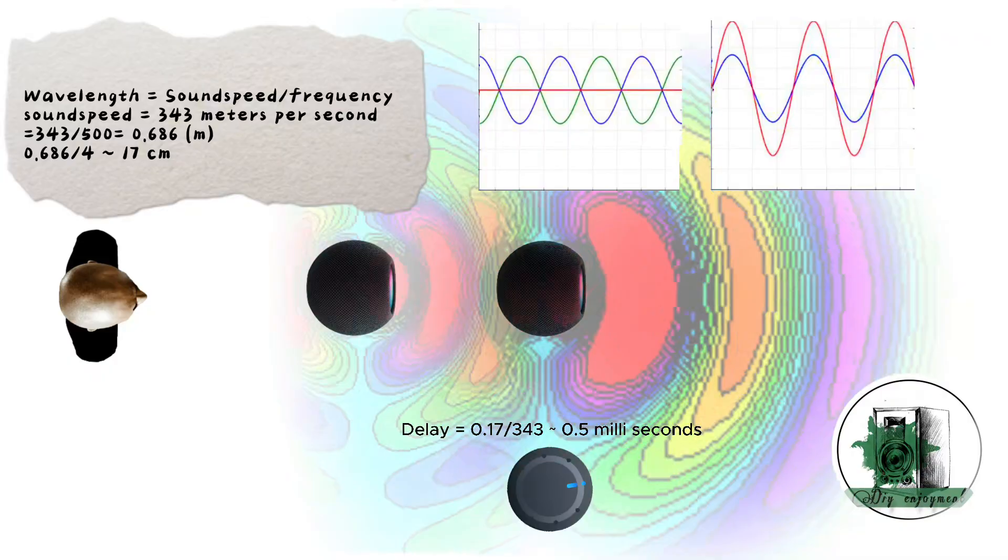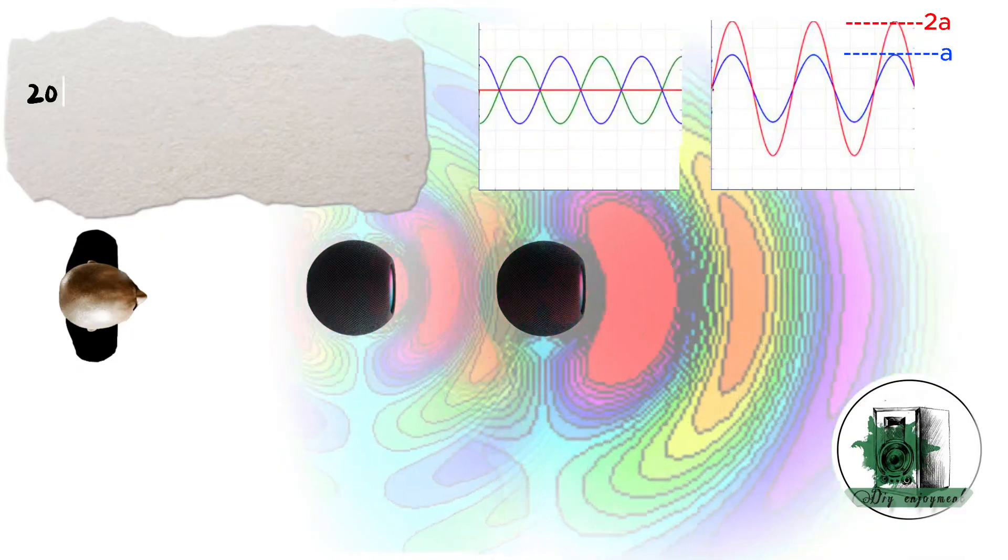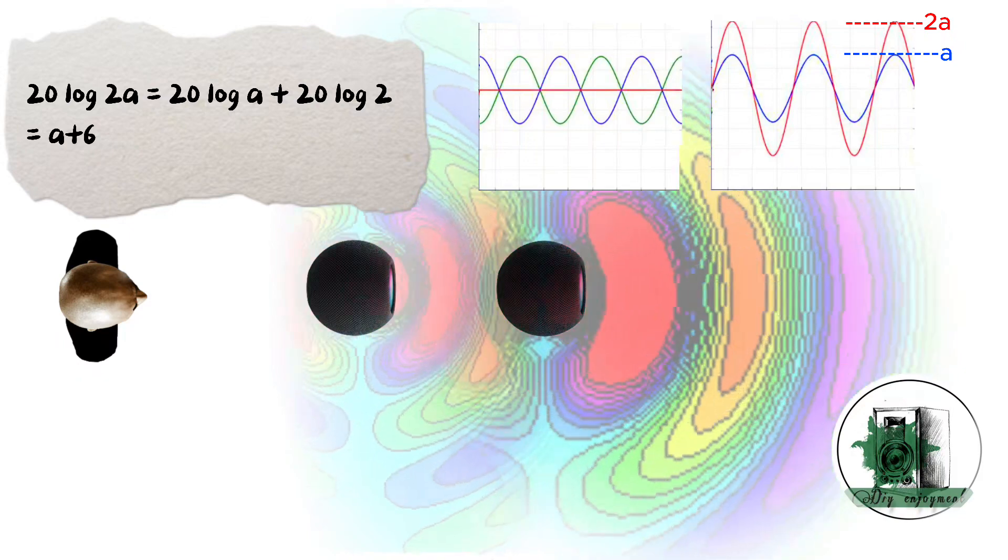The rear wave is cancelled out, while the front wave is reinforced, effectively doubling its amplitude. Through simple calculations, this doubling results in a 6 dB increase in the sound level of the front wave.